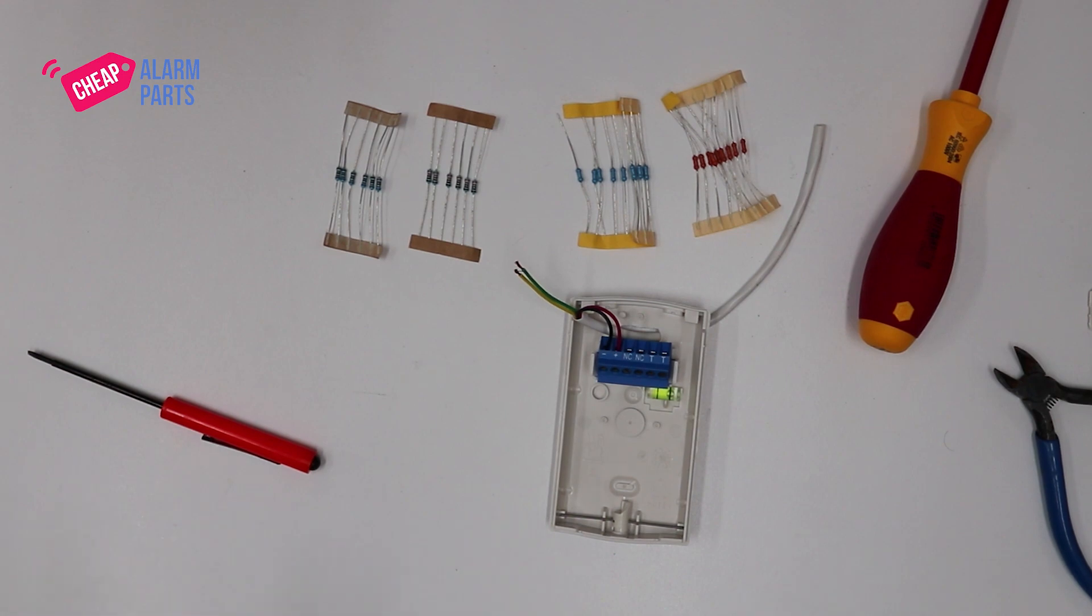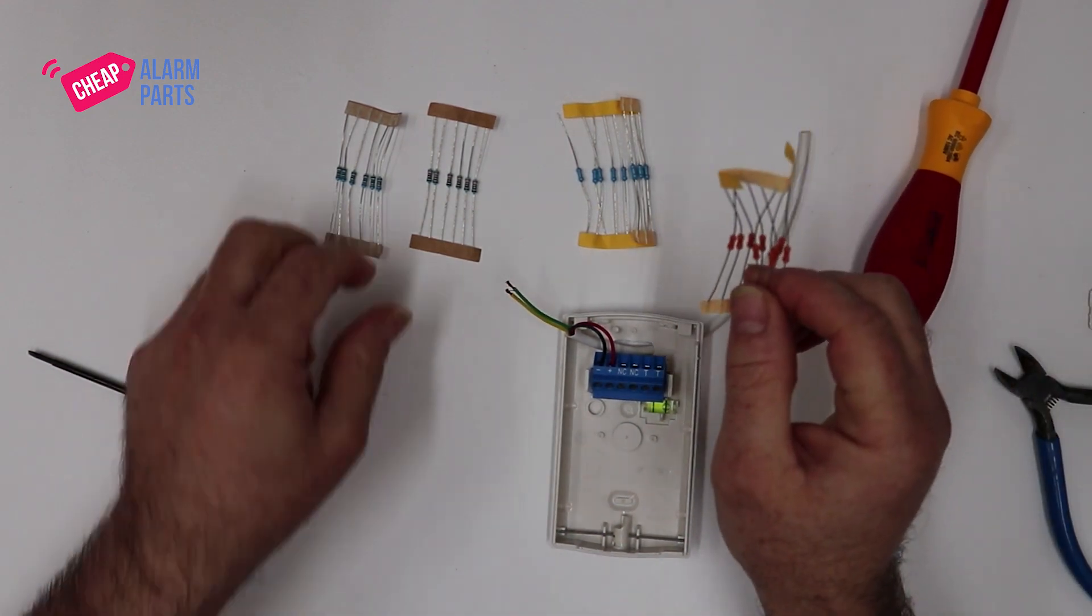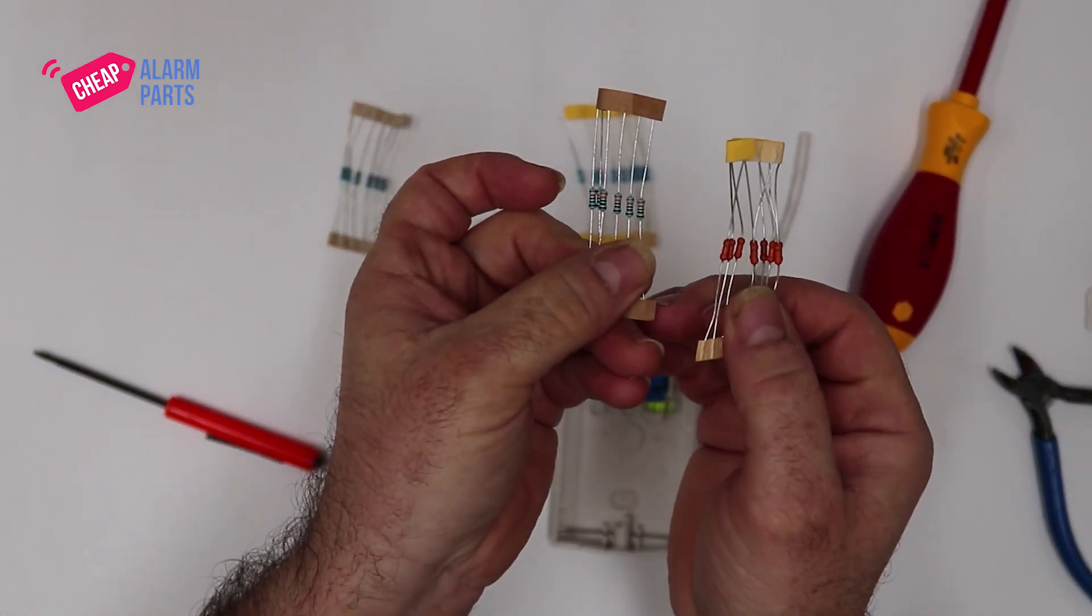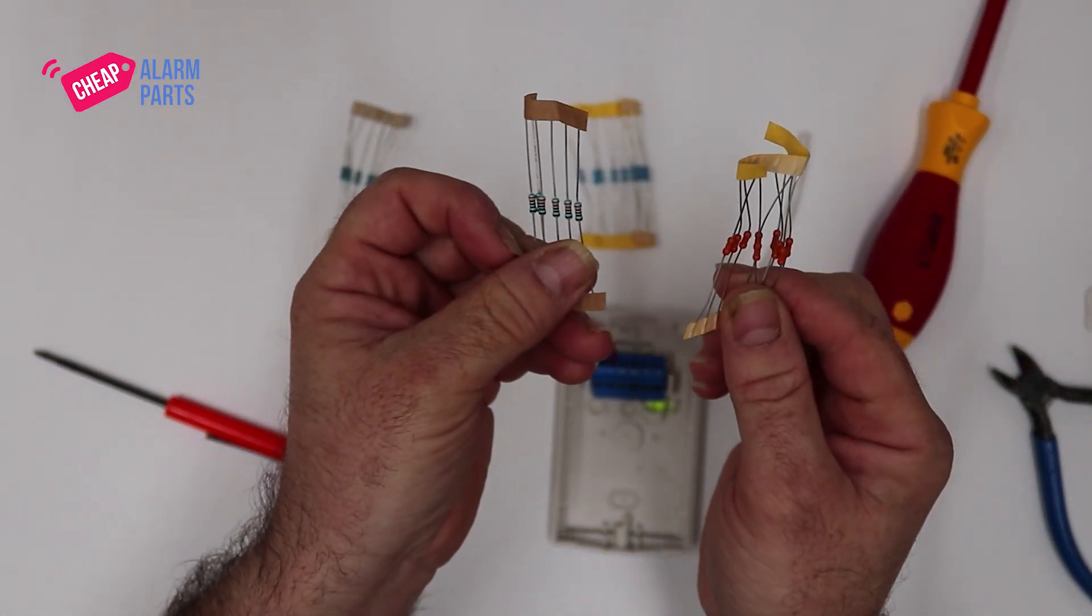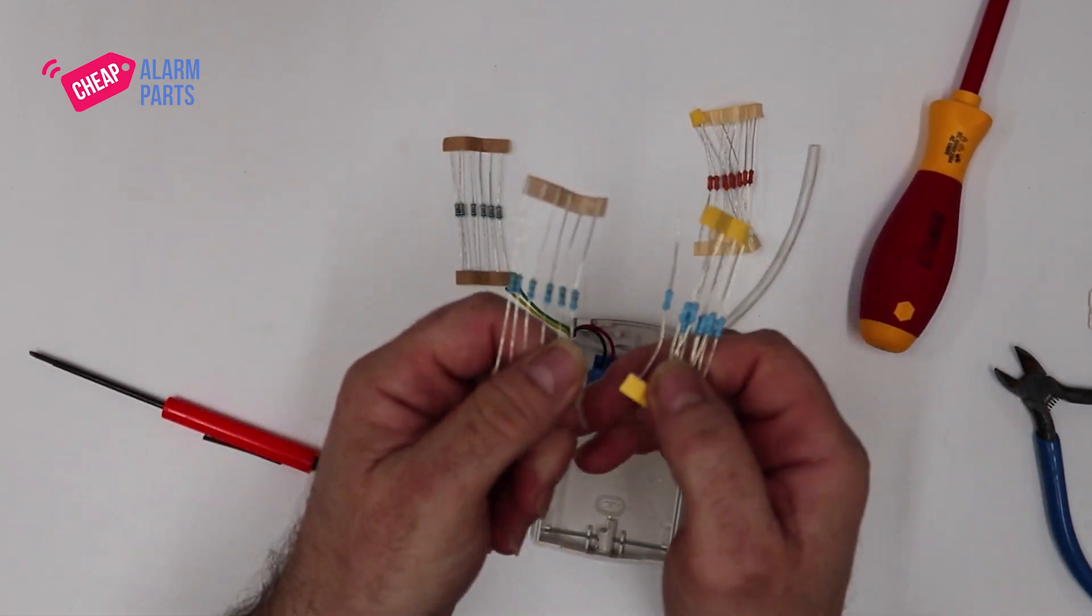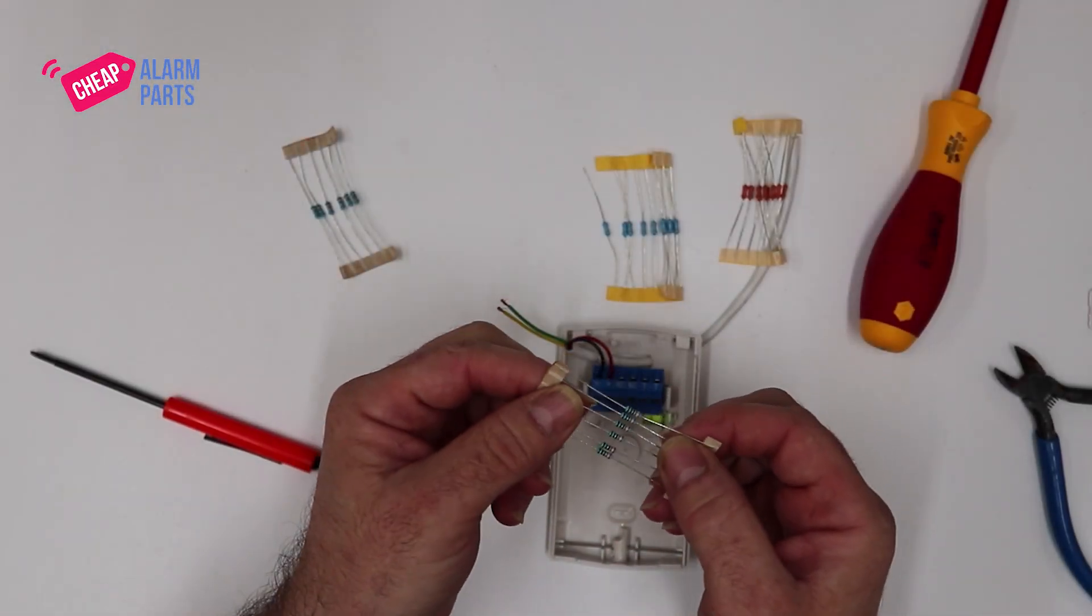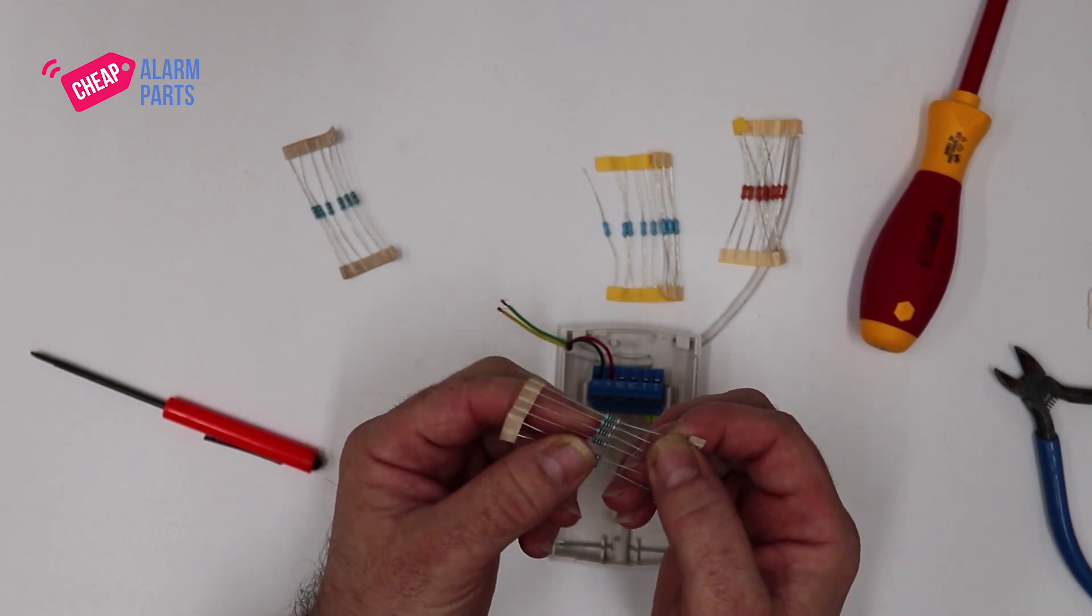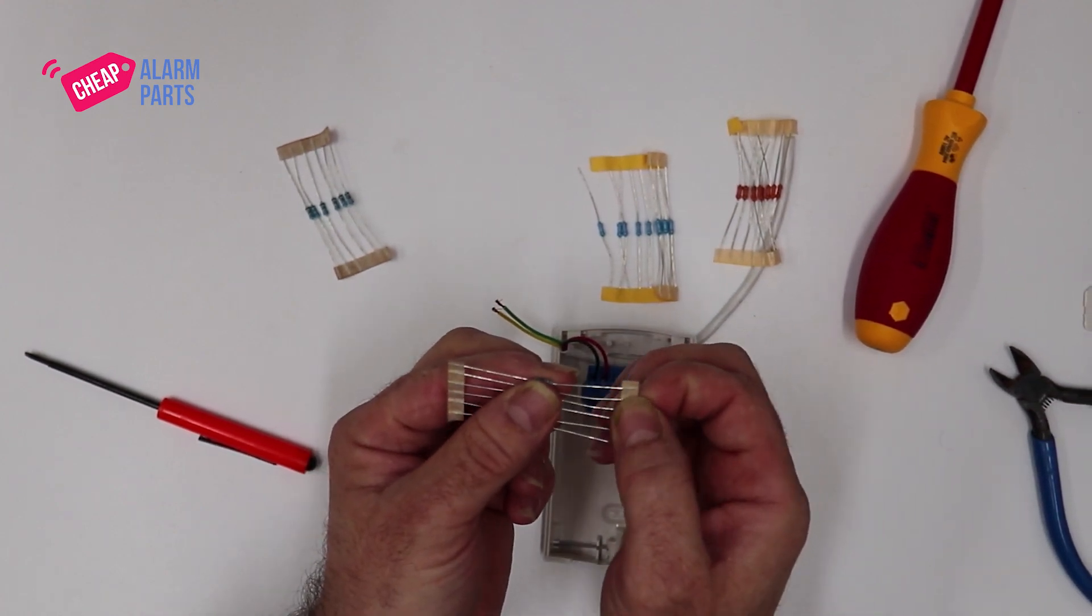So if you're connecting your detector to zones 1 to 8, we normally use the 3.3k. If you're connecting to zones 9 to 16, we use the 6.8k. It's a good idea to cut the resistor off the pack and not pull it out. Sometimes the glue sticks to the copper and it doesn't make a good contact when you put it into the sensor.